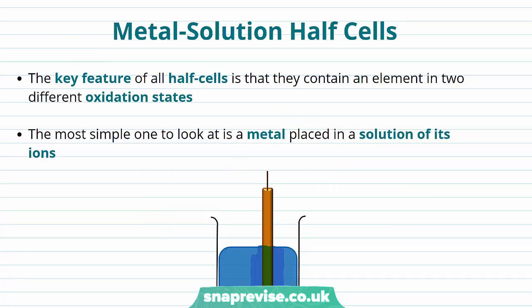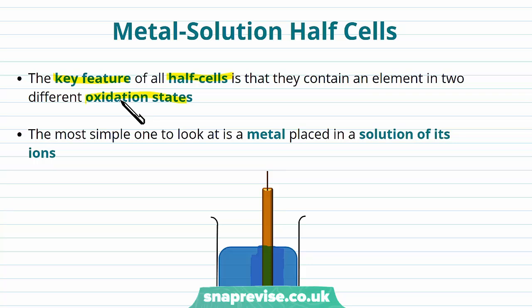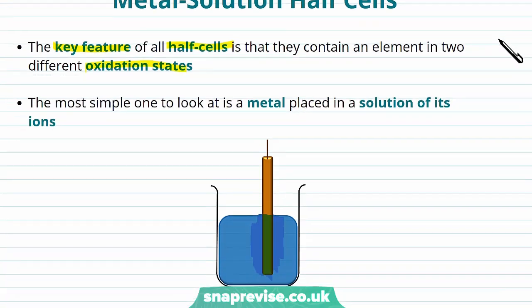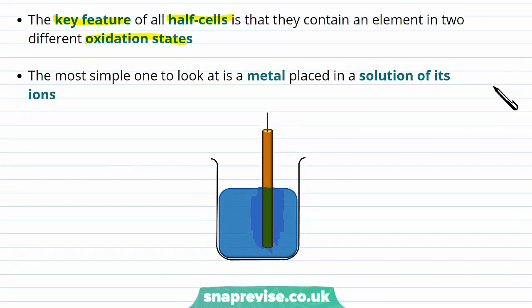So if we're going to make cells, how do we set up these half cells to generate and use the electrons? A key feature of all half cells is that they contain a particular element in two different oxidation states. An oxidation state tells us how many electrons have been gained or lost from the element. The most simple half cell to look at is where we place a metal in a solution of its ions.